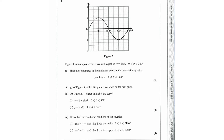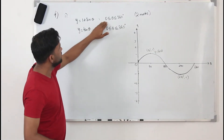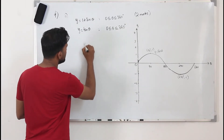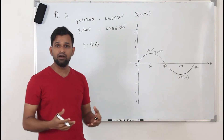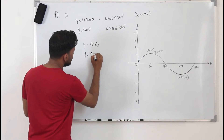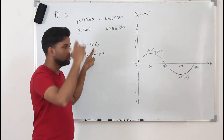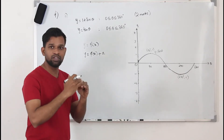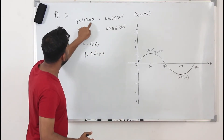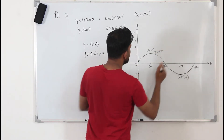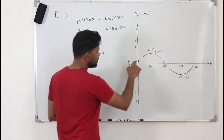Now for part (b), they want you to sketch two graphs: y = 1 + sinθ and y = tanθ, with the limit from 0 to 360. For y = 1 + sinθ, we know the base curve is y = sinθ. From graphs and transformations, if you add a constant to a function, the graph shifts along the y-axis upward by that number of units. So adding 1 shifts the whole curve upward by 1 unit.